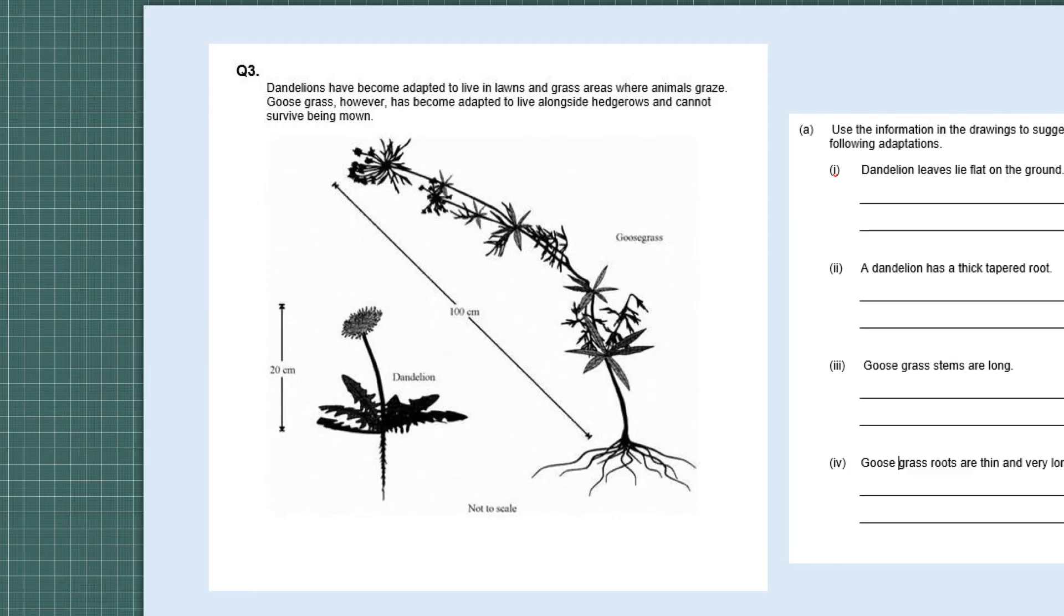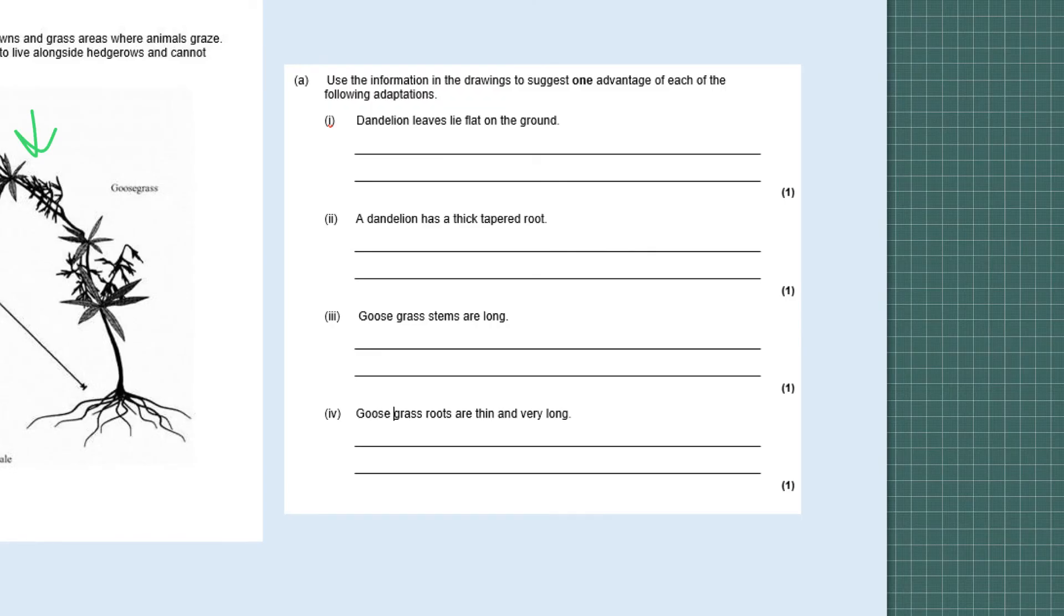Next question. It says dandelions have become adapted to live in lawns and grass areas where animals graze. Goose grass however has become adapted to live alongside hedgerows and cannot survive being mown. They've given you important information that it can't survive, so this one doesn't survive where the grass is being cut. The question says use the information in the drawings to suggest one advantage of each of the following adaptations. They actually give you the adaptations but you've got to say one advantage for each. Again I'd like you to pause and write down your answers.